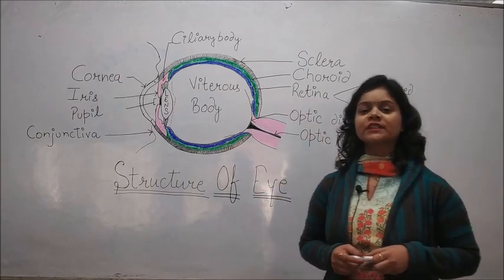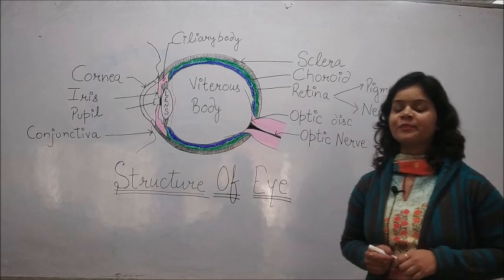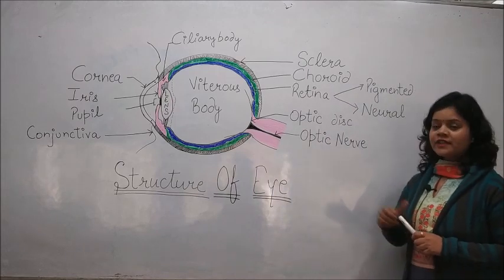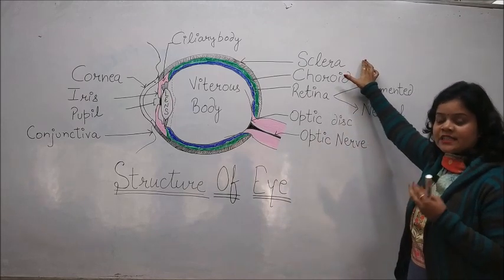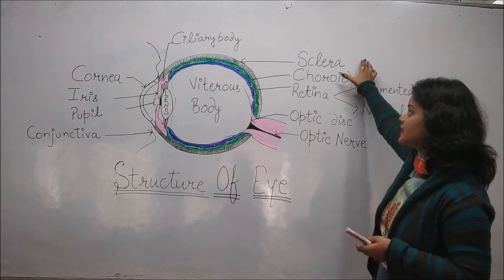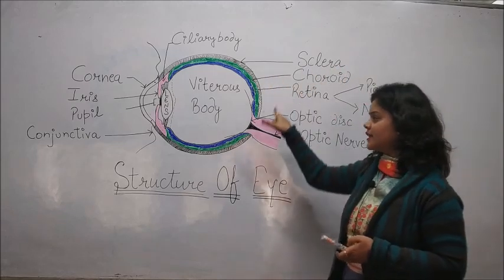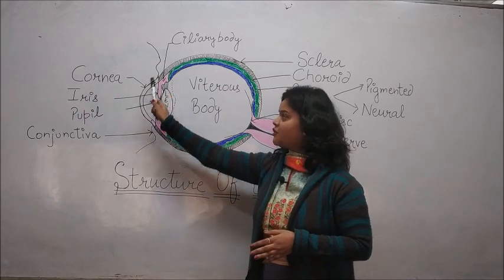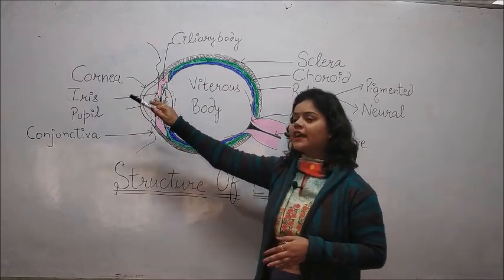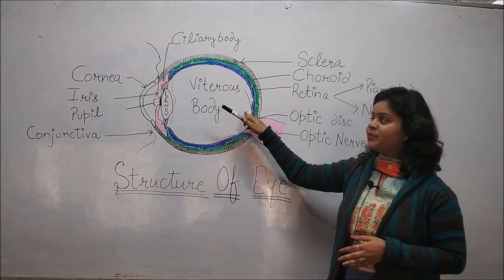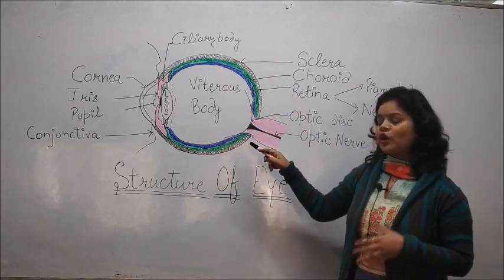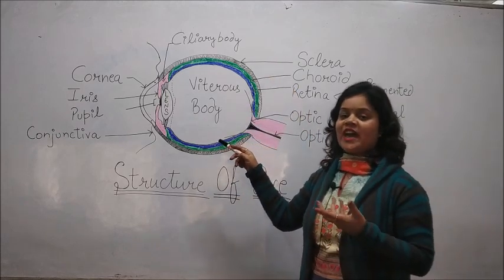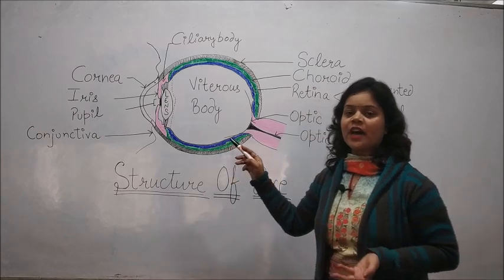First of all, we are going to discuss about the layers of the eye. The first outermost layer or we can say the tunica fibrosa consists of the sclera posteriorly and anteriorly it consists of the cornea. Cornea is a transparent layer which allows the light to enter into the eyeball. Sclera is mainly the collagen or fibrous layer which acts as the protective covering for the eyeball.